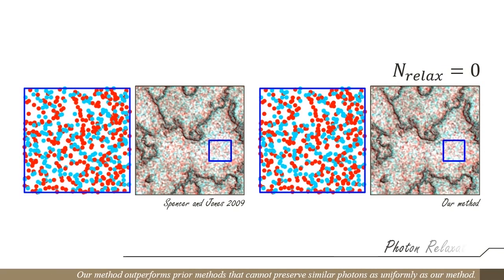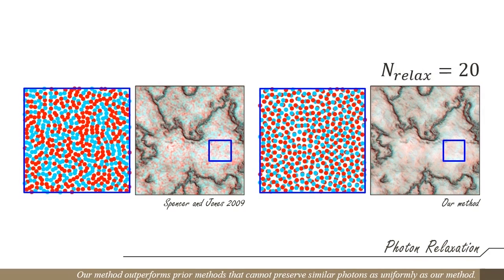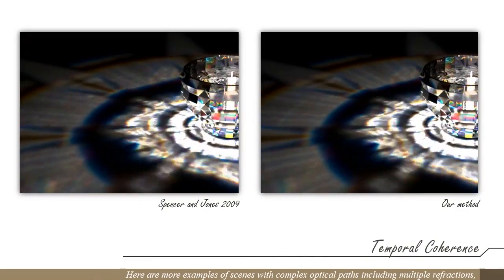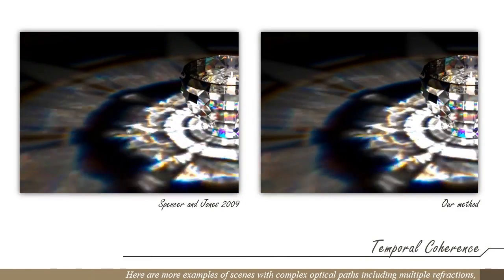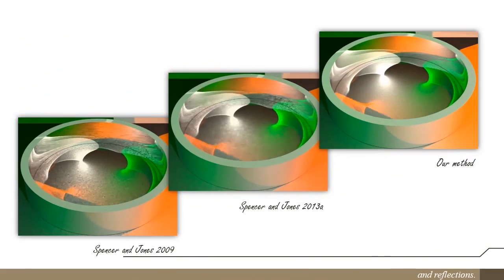Our method outperforms prior methods that cannot preserve similar photons as uniformly as our method. Here are more examples of scenes with complex optical paths, including multiple refractions and reflections.